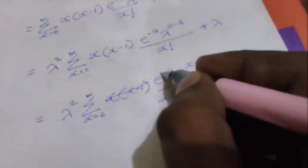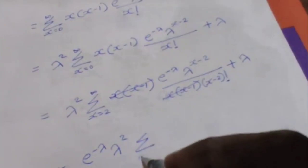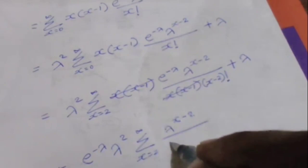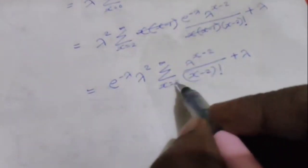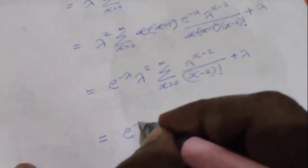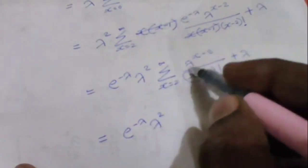When x equals 2: lambda to the power 0 is 1 and 0 factorial is 1. The full summation from x equals 2 to infinity of e to the power minus lambda times lambda to the power x minus 2 divided by x minus 2 factorial expands as 1 plus lambda plus lambda squared over 2 factorial plus ... which equals e to the power lambda.